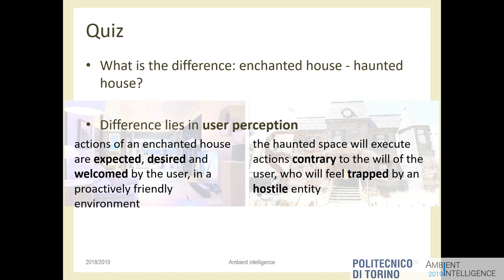The enchanted house was friendly because it was doing what the user wanted in that moment. The haunted house executes actions contrary to the will of the user — the user doesn't want to be locked in. The user feels trapped, not served. And this feeling is real: if you go to a place with too much automation and feel it's beyond your control, even if the place is very nice, you will feel trapped because the system is doing something you don't understand or don't want in that moment.